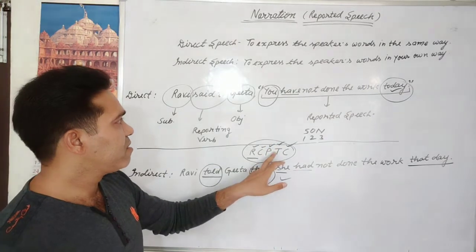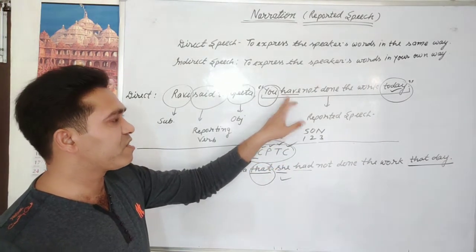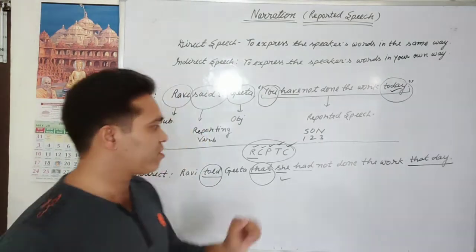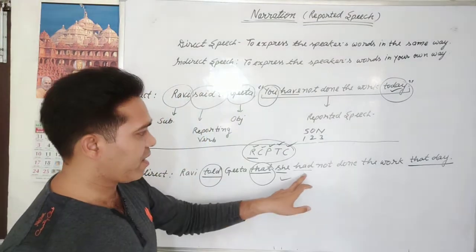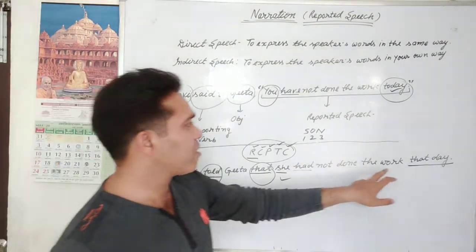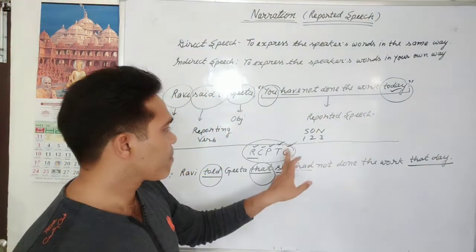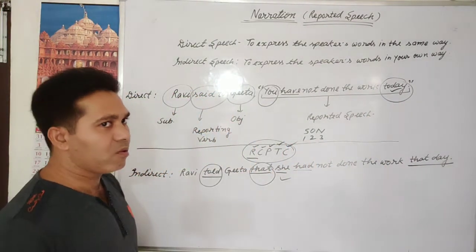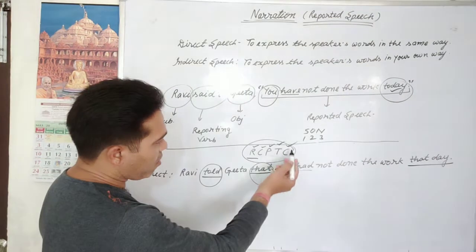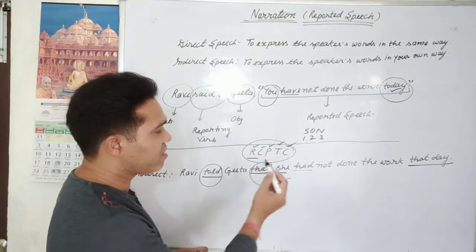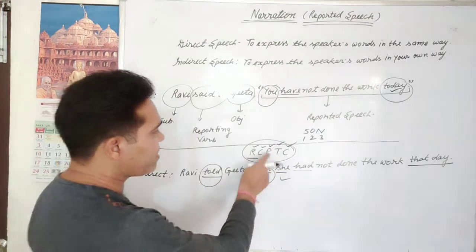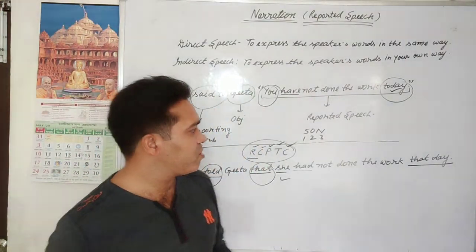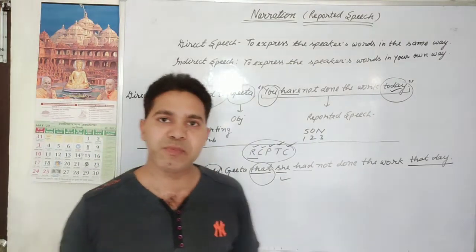Tense — present perfect tense changed to past perfect tense, so 'have not done the work' becomes 'had not done the work'. Condition — 'today' changed to 'that day'. Now I will tell you all the detailed RCPTC rules, and after learning these, you will be able to do all reported speech.